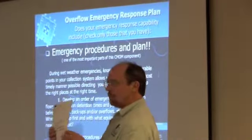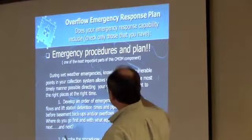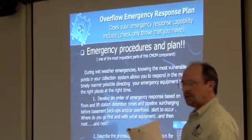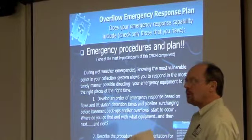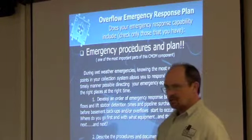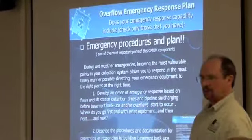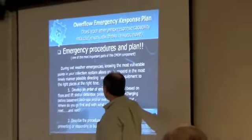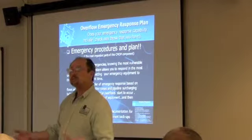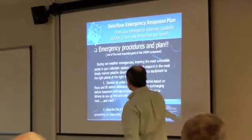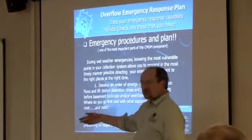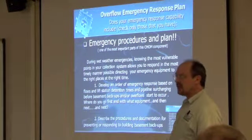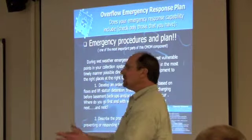This is the biggest piece and I think it's the core of an emergency response plan. Having a good plan means knowing where your most vulnerable parts of the system are, and because of that you're going to respond accordingly. It's developing an emergency response based on flows, lift station detention times, and pipeline surcharging—developing a response before basement backups or overflow start to occur. It's asking where you go first and with what equipment, then next, and then next—especially during those big events.